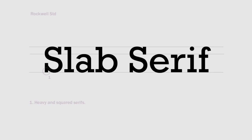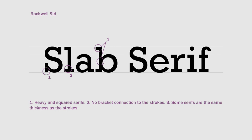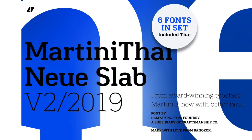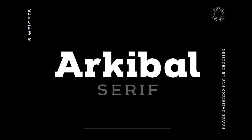The last subcategory within serifs is Slab Serif. As printing processes evolved, they allowed for more refined ink coverage on paper. The shape of the serif is square compared to previous categories — it's thick, heavy, and with little to no bracket connection to the strokes. The thickness throughout the characters is the same, and the rounded characters have a complete vertical stress. The X height tends to be very tall in relation to the cap height. Some slab serif font types from Envato Elements are BW Glenn Slab, Martini Tai Noya Slab, and Archival Serif.